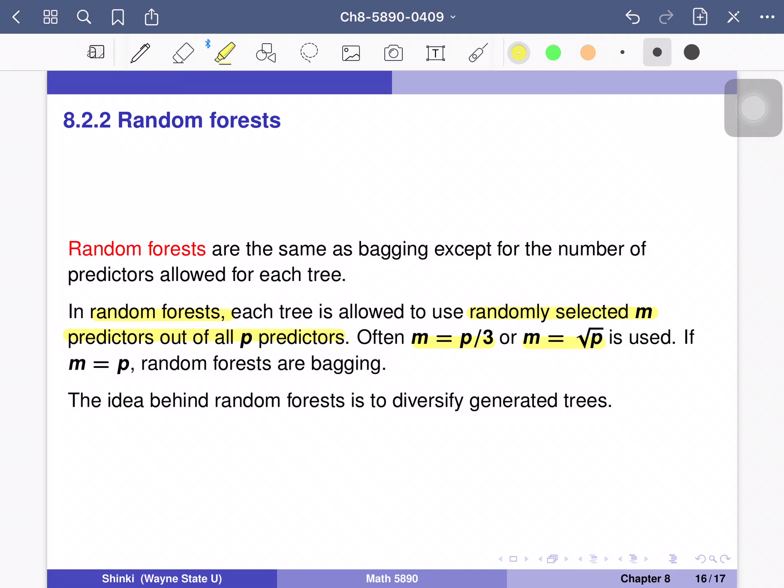So in each step, for each tree, we have bootstrapped observations, but also we randomly choose a certain number of variables. And we can only use those variables to make a tree.